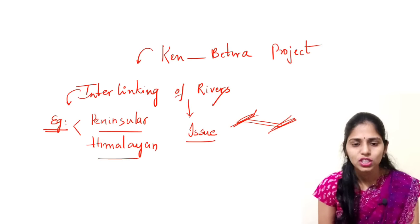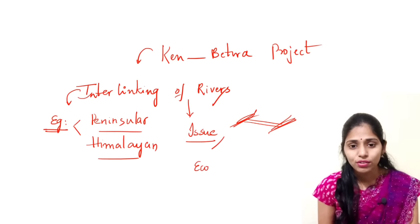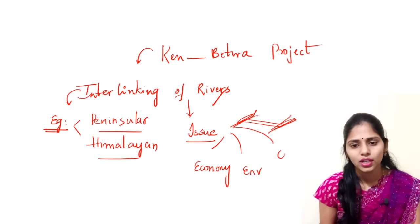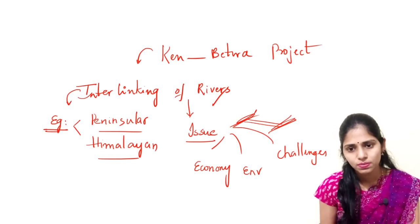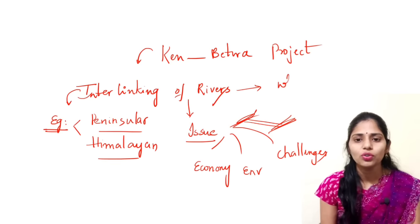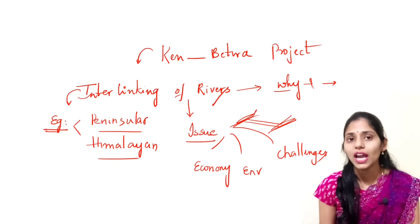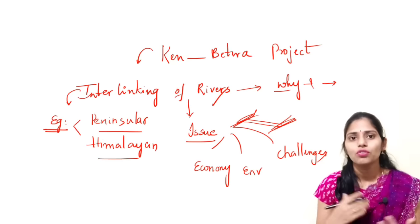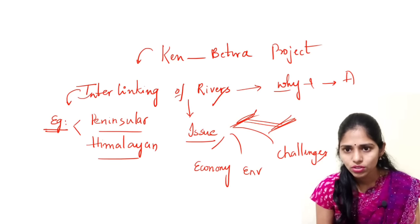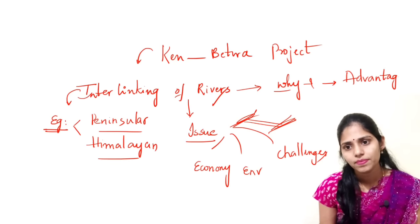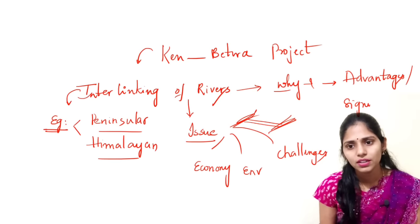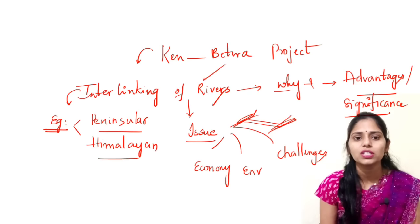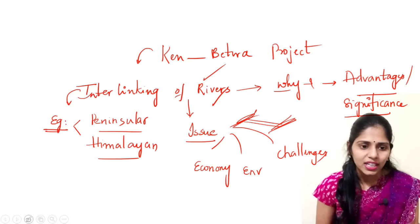You have to see issues from economy point of view and environmental point of view, as well as challenges. Why are we going for interlinking of rivers? We have some advantages in mind. So you have to see what are the advantages or significance of interlinking of rivers. Also, why is it in news now? Because the Ken Betwa project has not yet gotten environmental clearance.